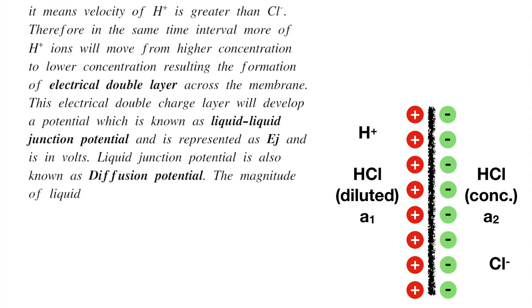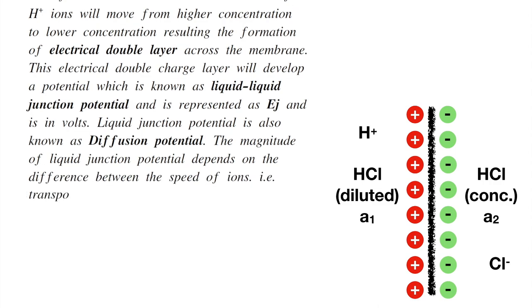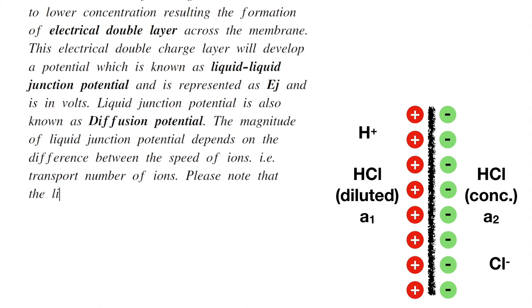The magnitude of liquid junction potential depends on the difference between the speed of ions, that is, transport number of ions. Please note that the liquid junction potential can be eliminated by using a salt bridge.